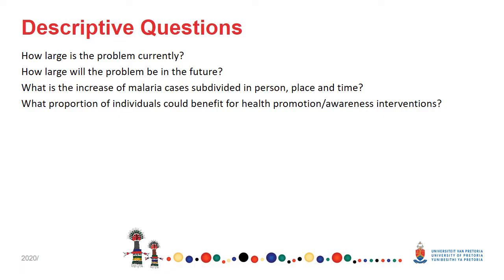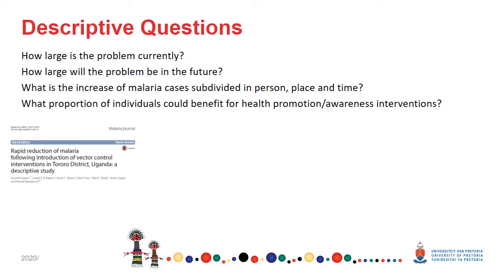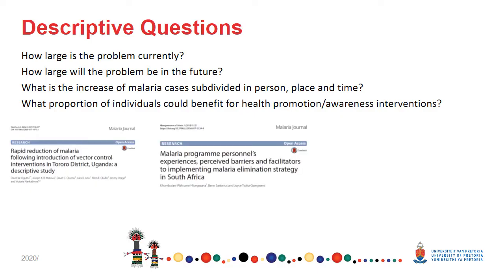This paper reported on the rapid reduction of malaria following introduction of vector control interventions in the Tororo district in Uganda, and was a descriptive study. One of the questions you might want to ask is how large is the problem currently, and how large will the problem potentially be in the future — because they've shown they reduced malaria by having different vector control interventions. Another type of study you might look at is examining malaria program personnel — what are some of the barriers they have perceived? This might give you an idea of how big the problem currently is and how it could be in the future.